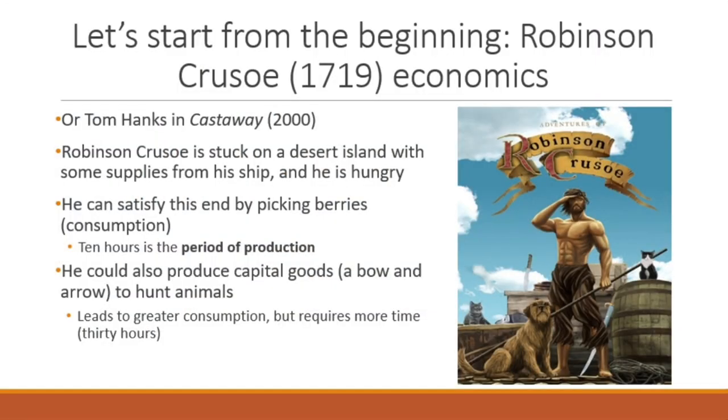Robinson Crusoe is stuck on an island with some supplies from his ship and has to figure out what to do. The first thing he's got to take care of is hunger — he wants to feel satiated, he wants to get food in him. He can satisfy this end by searching around the island and picking berries. It takes time to figure out where the berries are located, which are good, which are bad. Let's say each day, for him to get enough berries to survive, he has to spend 10 hours searching for berries. This is the period of production — the time from the beginning of the production process to when the actor has the consumer goods.